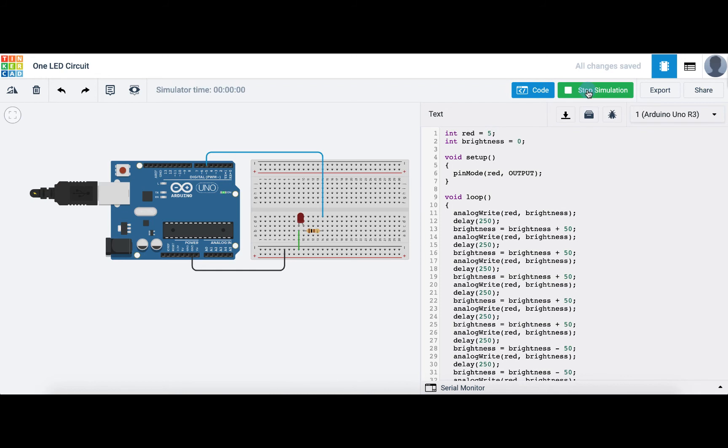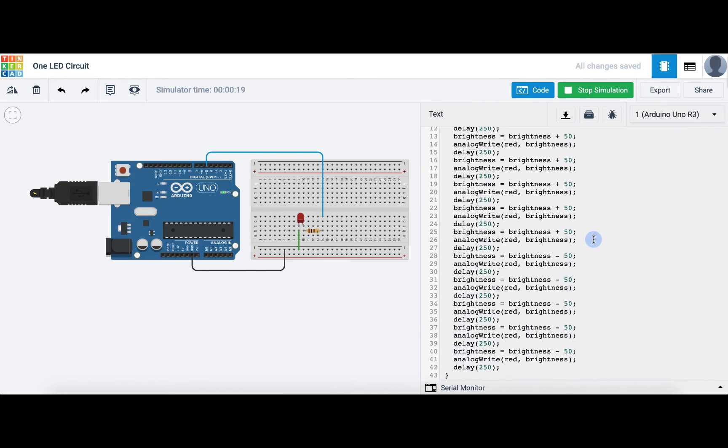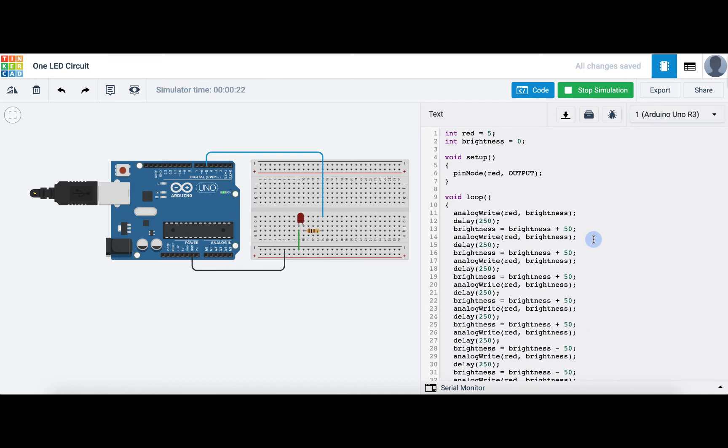Here we have our pulsing LED program that we wrote in the last lesson. This program works great, increasing the brightness of our LED by 50 every quarter second until it reaches full brightness, and then decreasing the brightness by 50 until it reaches 0. The only thing is that we are repeating a lot of the same commands over and over again, which is making our program really long. This is exactly the perfect time to implement a for loop. We can see that lines 11 to 27 are repeating by increasing the brightness variable by 50, and then setting the LED to that brightness. Let's instead use a loop that we just wrote in place of these commands.